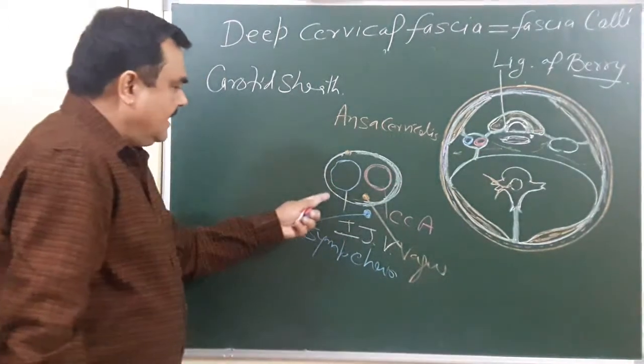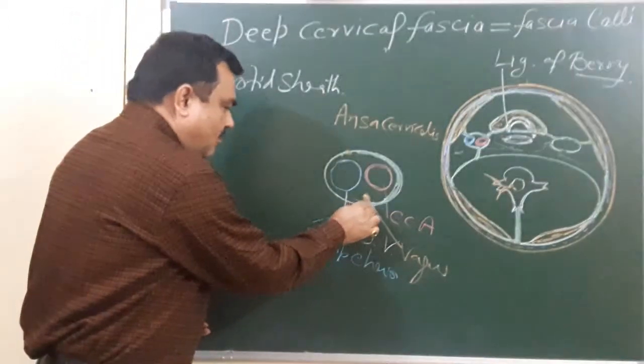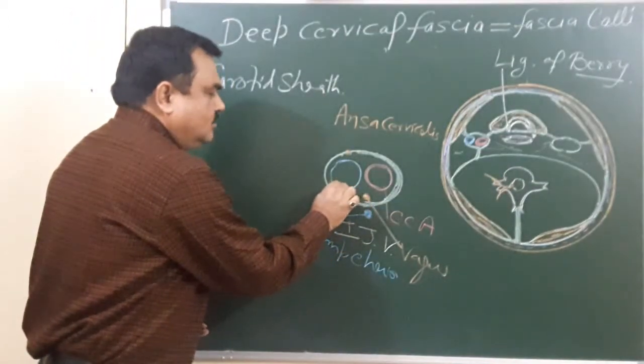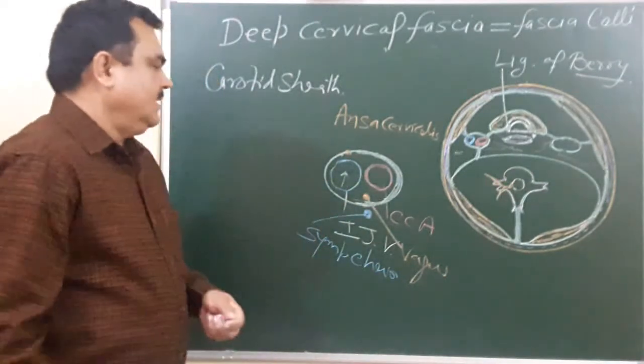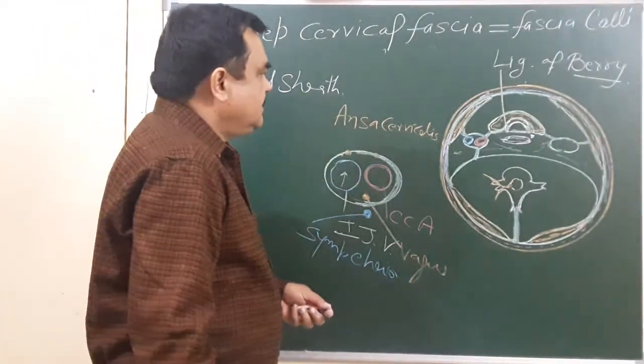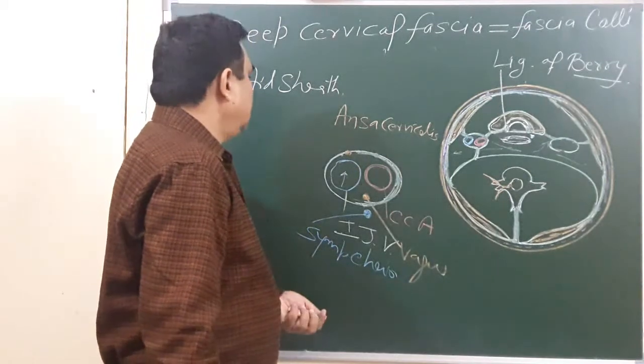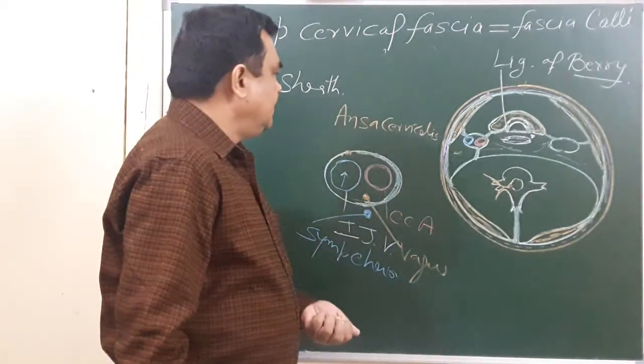This lateral thin part allows more blood to pass through the vein. So this is all about the carotid sheath.